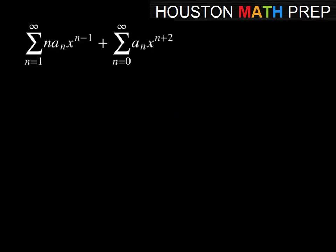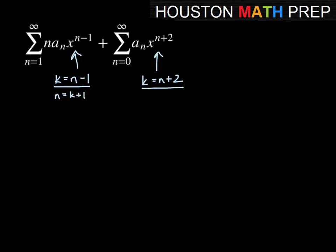Let's look at another example. Here we first want to make sure we have the same power. In this first power series, I'm going to let k equal n minus 1. Over here in this second power series, k will equal n plus 2. So for the first one, k equals n minus 1, or equivalently n equals k plus 1. For the second one, k equals n plus 2, or equivalently n equals k minus 2.